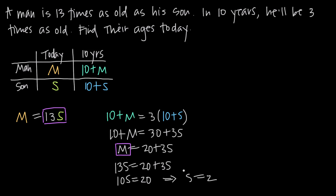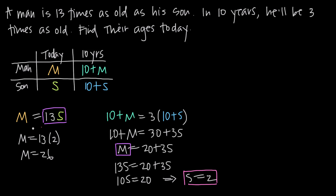With s = 2, we plug it into our equation for m in terms of s: m = 13 times s, so m = 13 times 2, which gives us m = 26. Now we have values for both variables. Since we defined m as the man's age today and s as the son's age today, the son is 2 years old and the man is 26 years old.